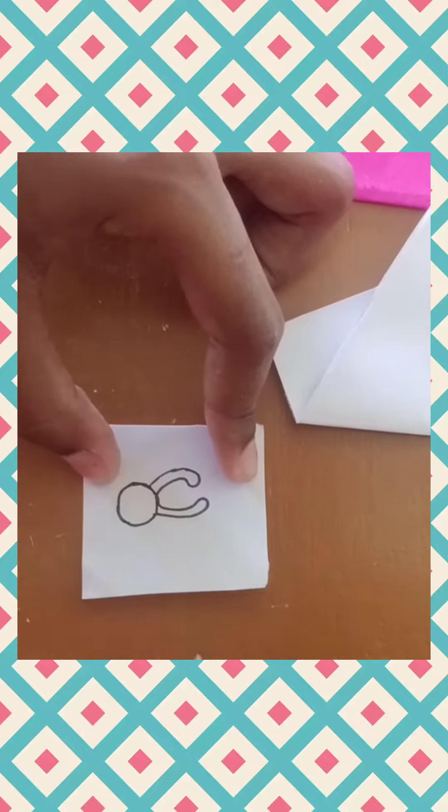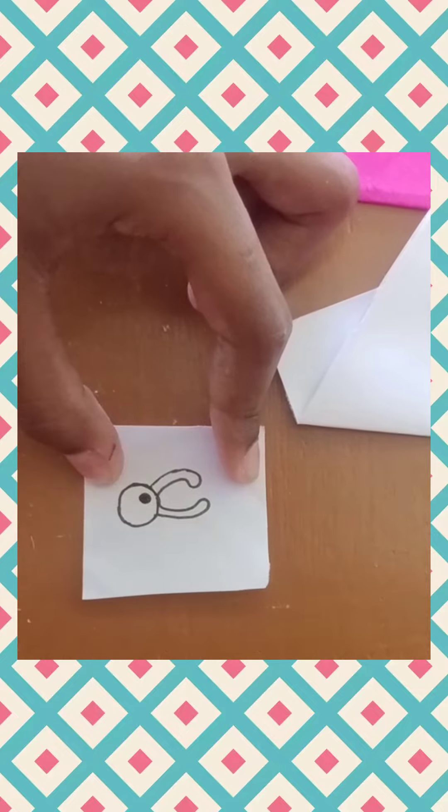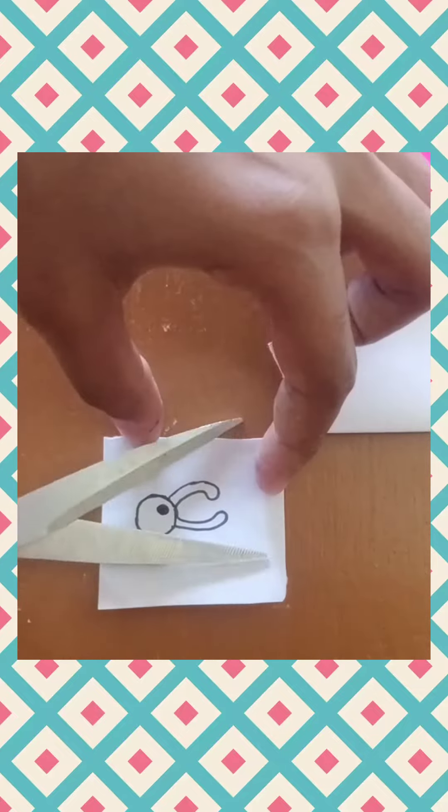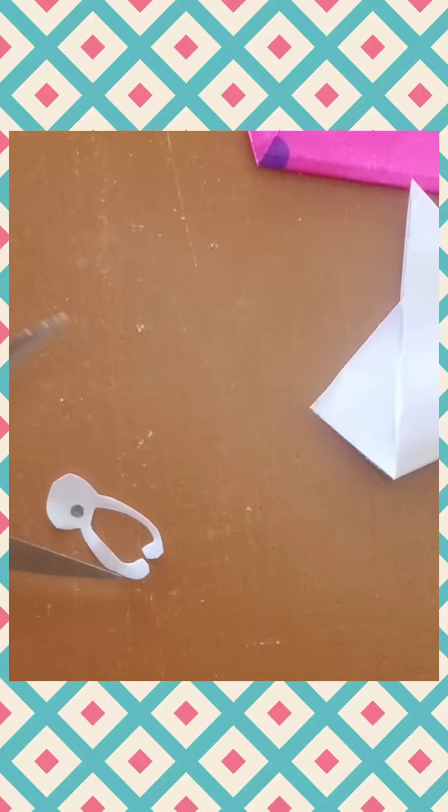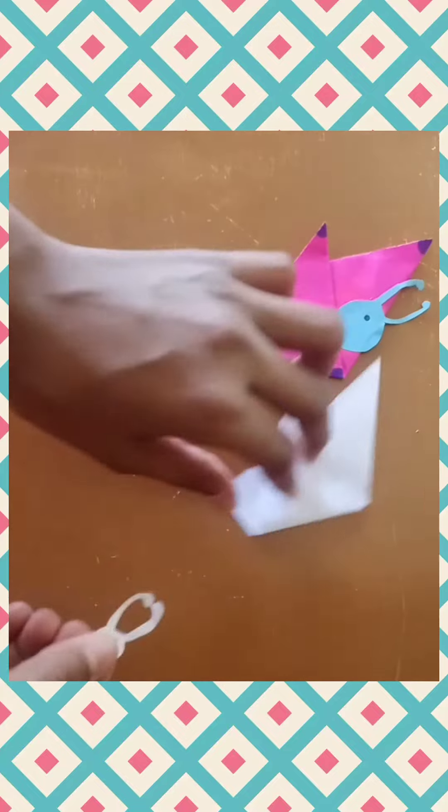Now draw a small circle and shade it with black color, which makes the eye. Cut it out using scissors. Now the butterfly's head is ready, and it's time to paste it.